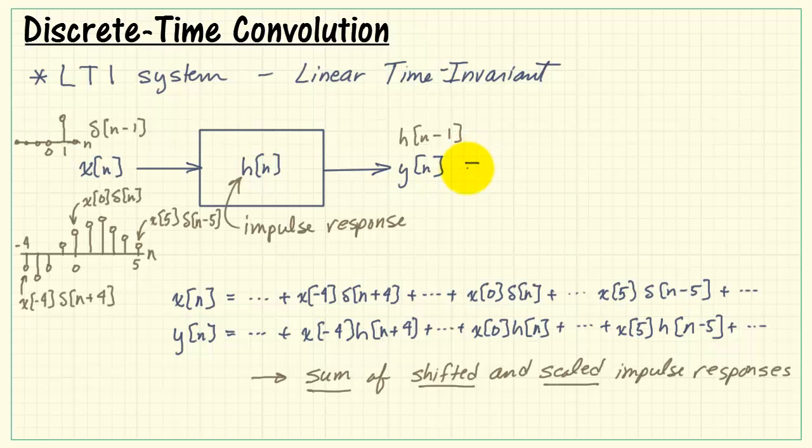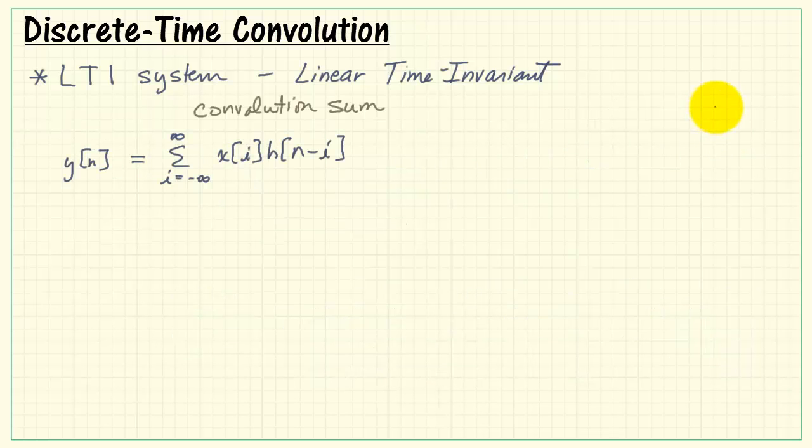Now let me generalize that as follows. I'll write this out as the sum running from i equals minus infinity to positive infinity. I've picked out three specific values here. These would be example values for x of i. We then see we multiply by h of n, but with the appropriate shift amount added. And that shift amount is minus i. We call this the convolution sum, and it applies to any LTI system.